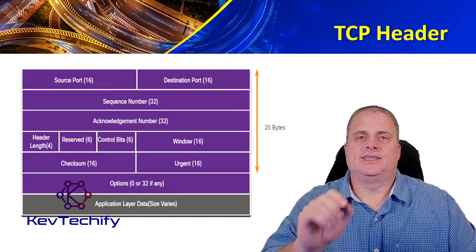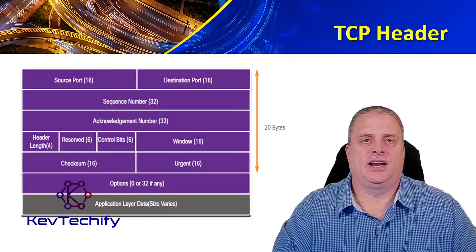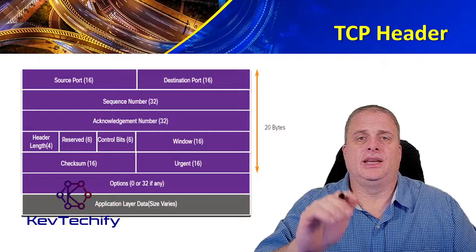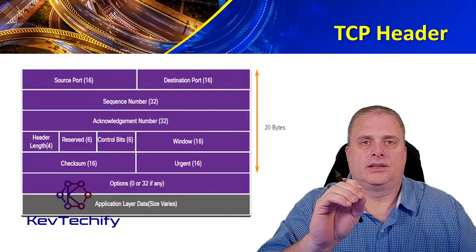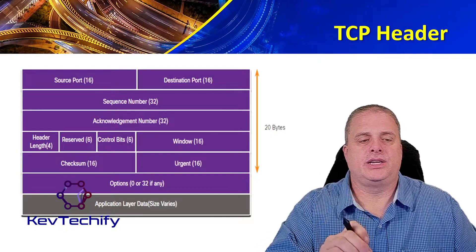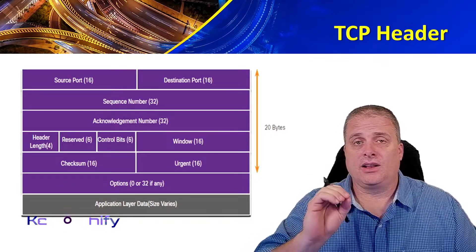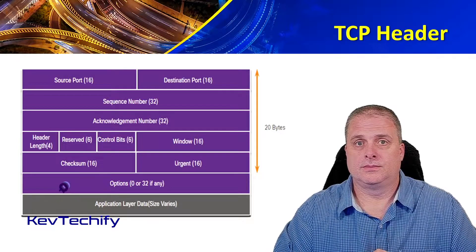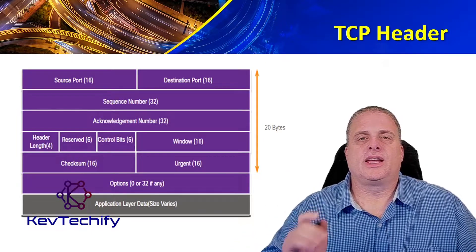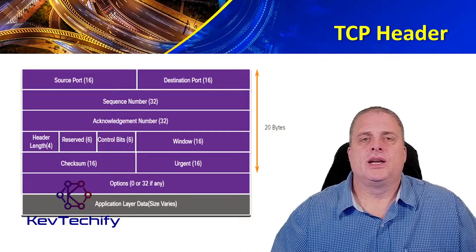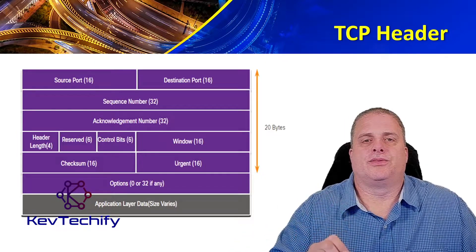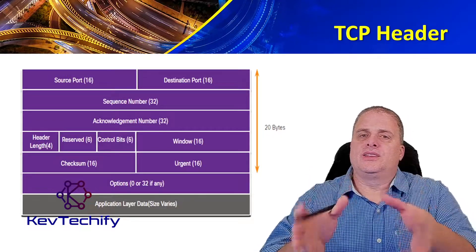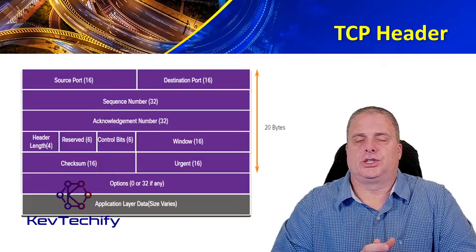The checksum is the error checking field. It's used to check the data integrity of the header and also of the data. Finally, the last field — the last 16 bits — is the urgent field. That is used to indicate whether or not this data is urgent.